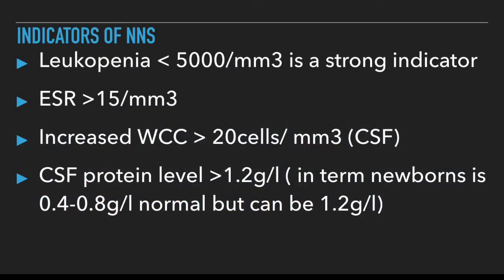After investigations, look out for certain indicators: leukopenia of less than 5,000 per millimetre cubed, ESR of more than 15 millimetres per hour, and increased white cell count of more than 20 cells per millimetre cubed in the CSF. Also in the CSF, look out for an increase in protein levels. Bear in mind that in term newborns protein levels may be high, so our indicator is if CSF protein is more than 1.2 grams per litre, we should be alarmed.